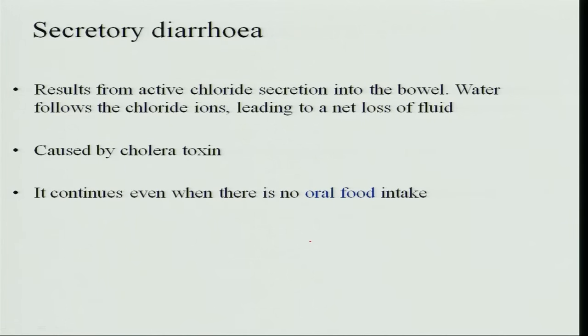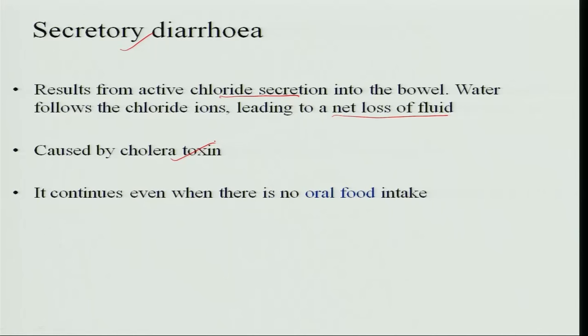Secretory diarrhea results from active chloride secretion into the bowel. This chloride secretion draws out more water, leading to a net loss of fluid. This generally happens in cholera. When the toxins of cholera are produced, they pull all the water from the cells and it is cleared from the intestine. Even if there is no food intake, whatever water is present in the body cells is drawn out and evacuated — so cholera leads to very fast dehydration.